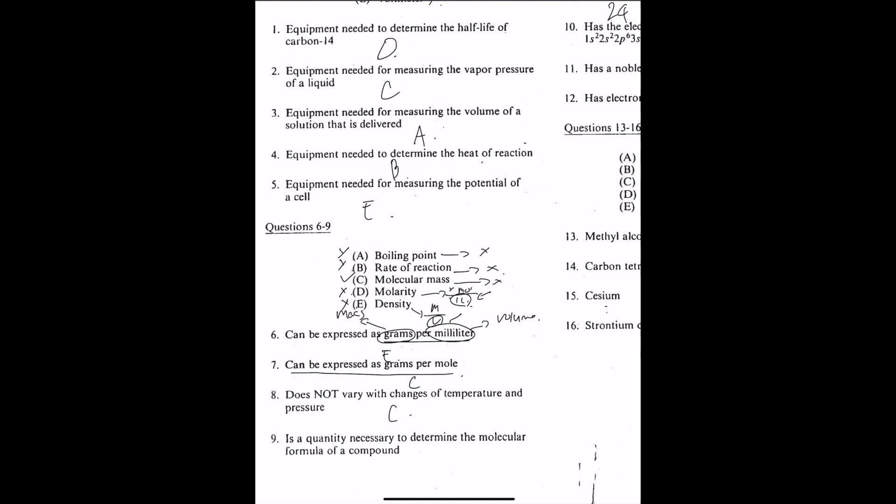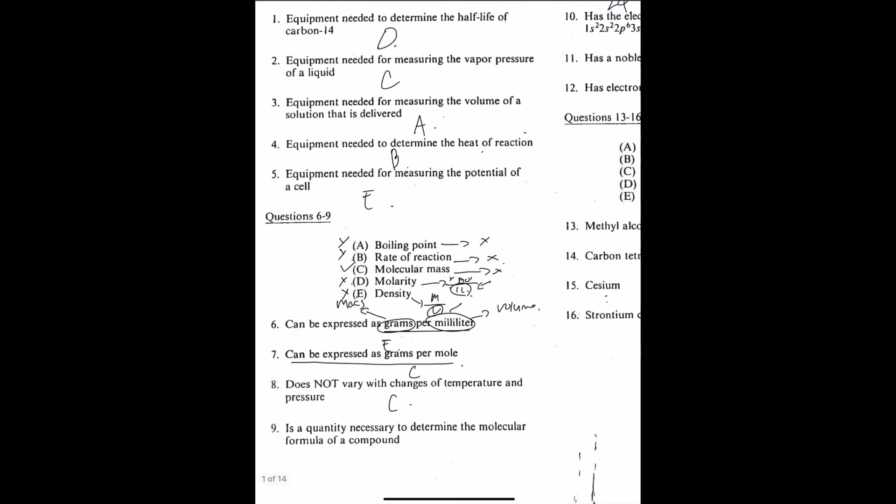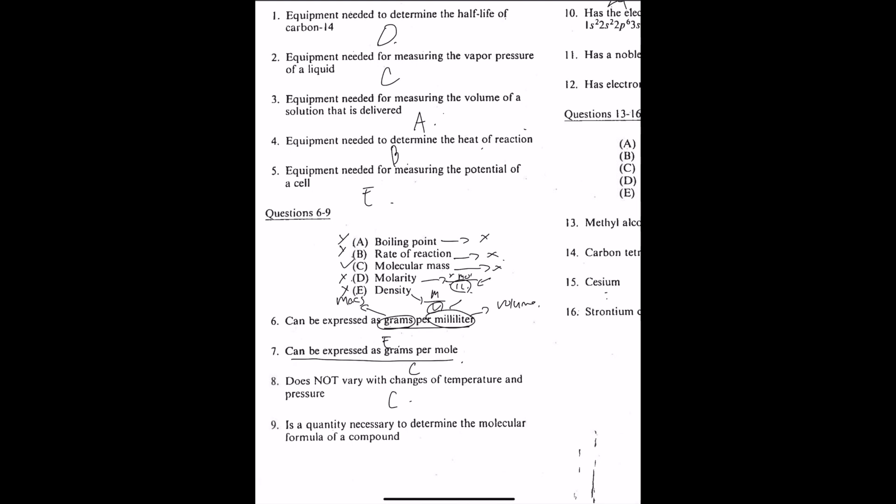Number nine, is the quantity necessary to determine the molecular formula of the compound? Let's say that we have an ethene. To determine the molecular formula of this, we definitely do not need the boiling point. We don't need the rate of reaction. We may need the molecular mass. We don't need the molarity or the density. So it should be C. This is because to determine the molecular mass of ethene, you have to know the molar mass of carbon and hydrogen, which is each 12. So the molecular mass of ethene should be 12 times 2 plus 1 times 4. That's 24 plus 4, which is 28 grams per mol.